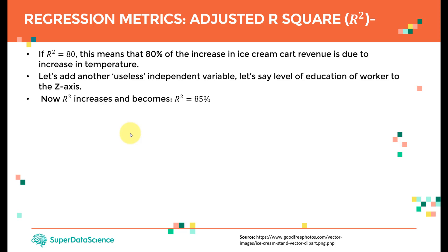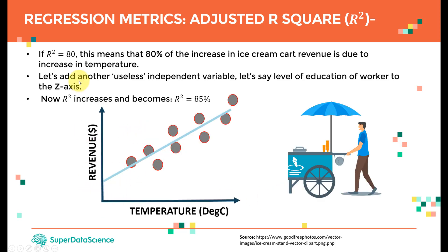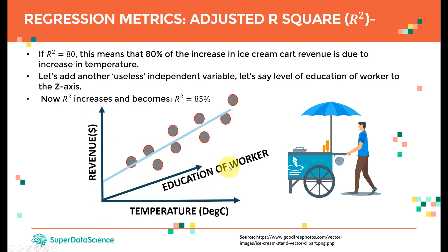Looking at the graph: we have temperature, revenue, and the linear model with R-square equal to 80. Now I'm adding another axis — a z-axis — representing the education of the worker as an additional independent variable. When you add an additional independent variable, in general you'll find that R-square goes up. So the more independent variables you add, R-square will increase — say to 85%.